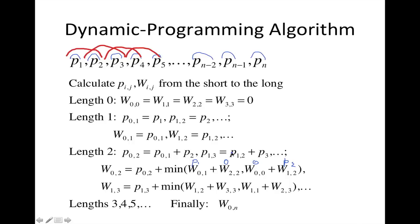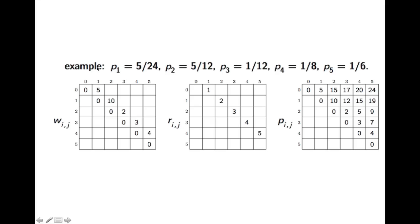So to organize this computation better, we can use matrix notation tables in the following way. Suppose we have these five examples that we want to calculate over, and to simplify the writing, let's make all of the probabilities have a common denominator of 24. So this is 5 over 24, this is 10 over 24, this is 2 over 24, this is 3 over 24, and this is 4 over 24. And now we can just neglect to write the 24 all the time and just use these numbers.